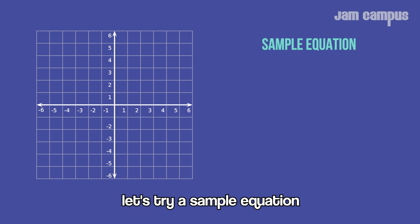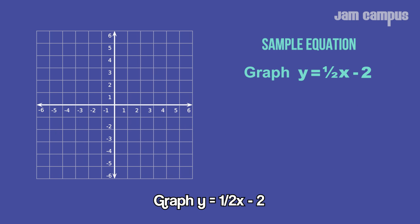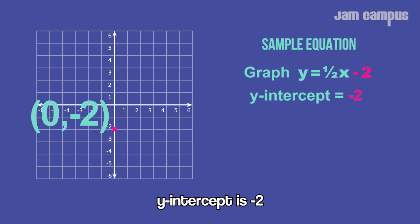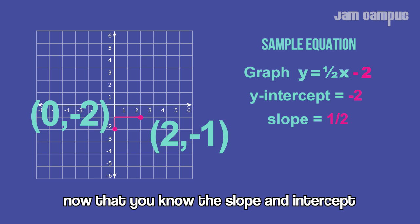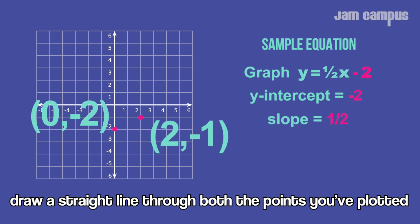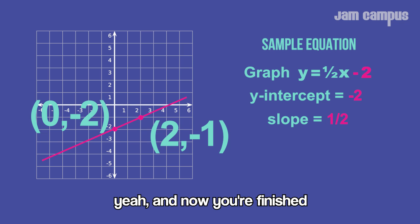Let's try a sample equation: graph y = ½x - 2. The y-intercept is -2. The slope is ½: up 1, over 2. Now that you know the slope and intercept, draw a straight line through both points you plotted. And now you're finished—you've graphed a linear equation!